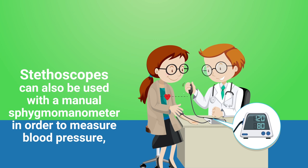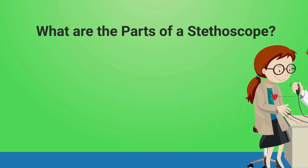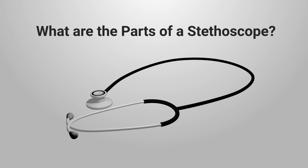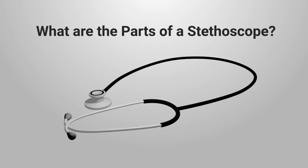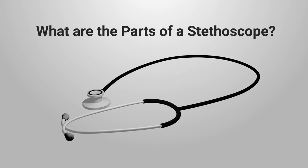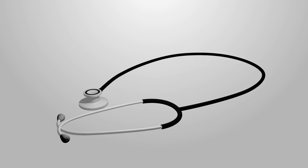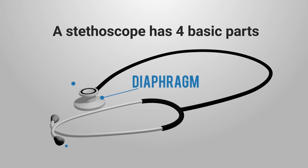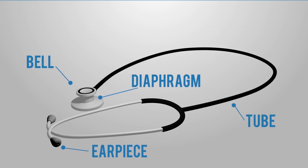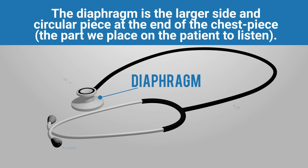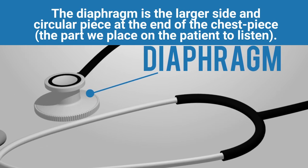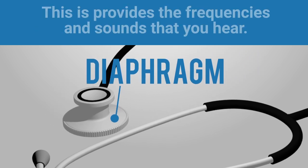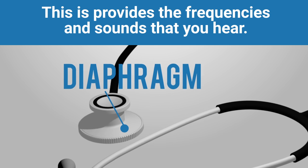What are the parts of a stethoscope? In order to know how to use a stethoscope properly, you first need a basic understanding of its parts. Pretty much all stethoscopes have four basic parts: the diaphragm, bell, earpiece, and tubing. The diaphragm is the larger, circular piece at the end of the chest piece — this is the part we place on the patient's skin to listen, providing the frequencies and sounds you hear.